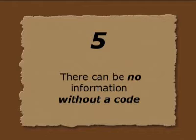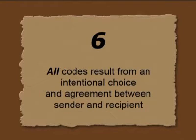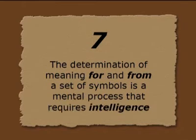Number five: there can be no information without a code. We have seen it in the examples I showed to you — in all cases, there was a code system. Number six: all codes result from an intentional choice and agreement between sender and recipient. Number seven: the determination of meaning for and from a set of symbols is a mental process that requires intelligence. That's what we see in all known systems.